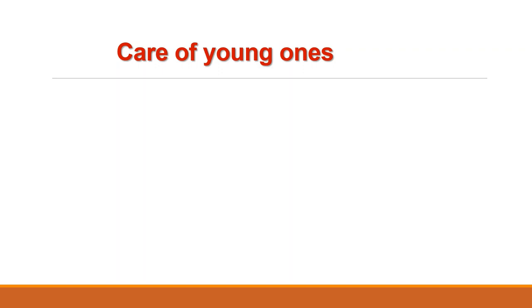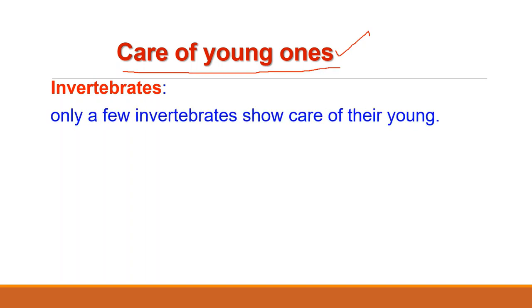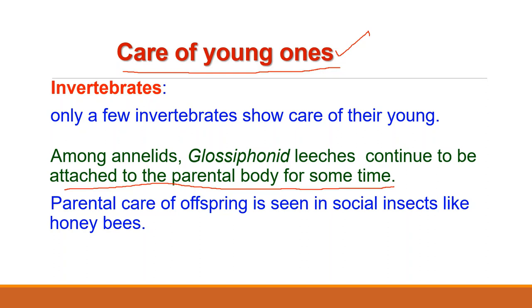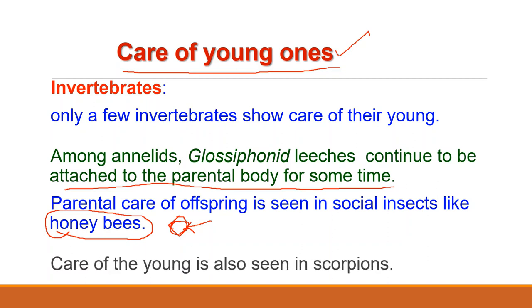Now we will take the second aspect: care of young ones. Once the young ones are born, they are to be protected. In case of invertebrates, only a few invertebrates show care for their young. Among annelids, glossy forehead leeches continue to be attached to the parent body for some time. Parental care of offspring is commonly seen in social insects like honey bees. The eggs are deposited in hexagonal shaped cells in the hive and worker bees visit the cells, clean them, inspect them and feed the larvae. The larvae pupate and then adults emerge in a few days. Care of young is also seen in scorpions where the female scorpion carries her offspring on her back for about a week.